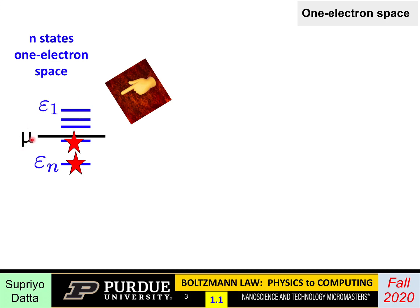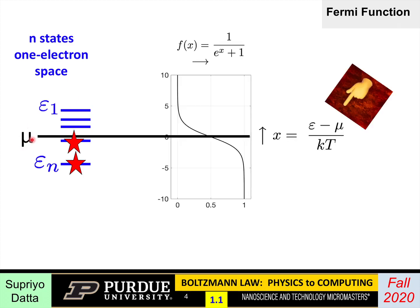As you raise the temperature, that dividing line becomes more diffuse, and so you use something called the Fermi function. Here I've plotted the Fermi function on the horizontal axis, while on the vertical axis I have a dimensionless quantity that tells you how far the level is from the electrochemical potential, normalized to the thermal energy kT, where k is Boltzmann's constant and T is the absolute temperature.